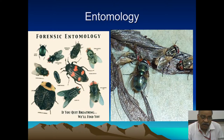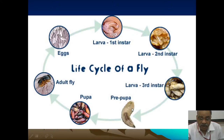Stages of insect activity: eggs, larva — with three stages: first instar, second instar, and third instar — then pre-pupa, pupa, and adult flying. Usually the time is very variable — three to four weeks, or one to two months depending on how they are developing.